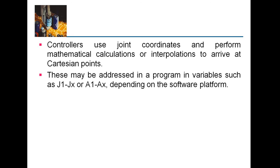The controller uses joint coordinates and performs mathematical calculations to arrive at the position. Joint addresses in programming variables are labeled j1 to jX, depending on the software available. Robot programming and software will be addressed in the subsequent chapter. With this, we will stop here. Thank you.